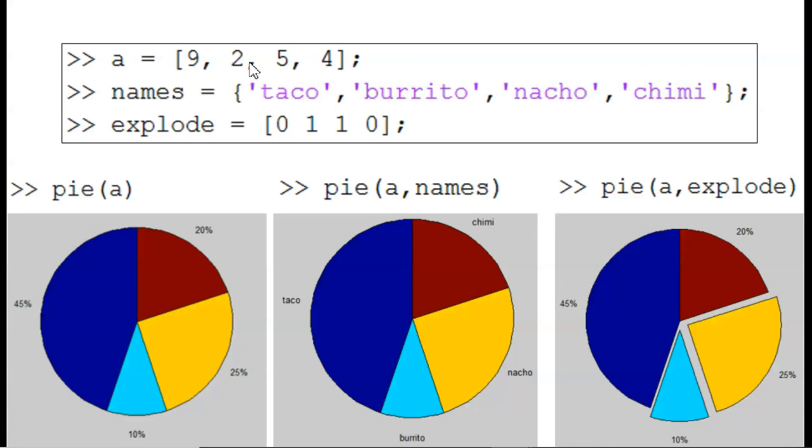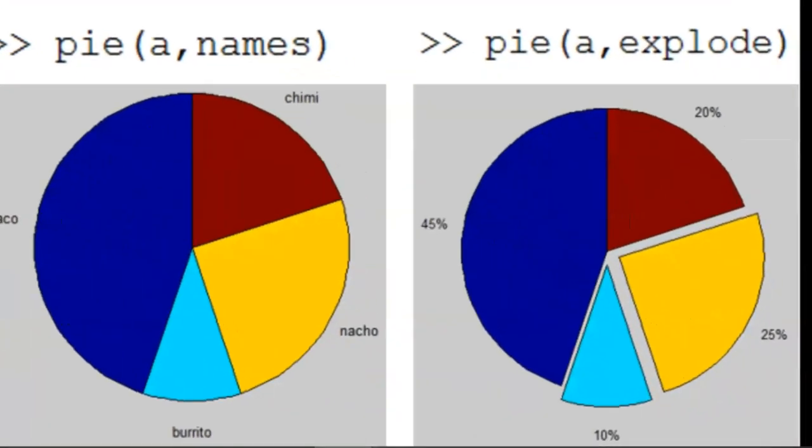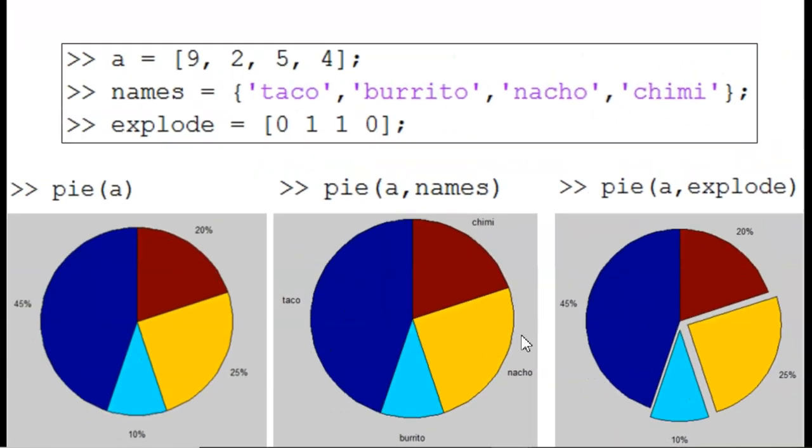Another interesting option is called explode. With this, we can emphasize certain slices of data by splitting them out of the main pie. To cause this, create a vector of ones and zeros, with ones corresponding to the slices you want to explode. In this example, the slices corresponding with the 2 and 5 data are separated from the main pie.